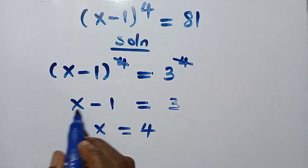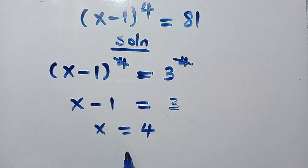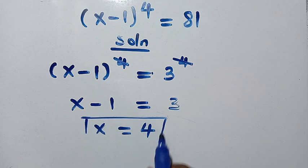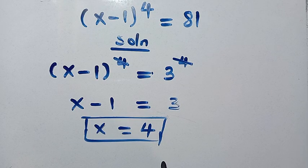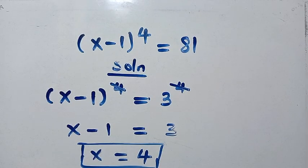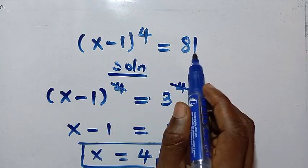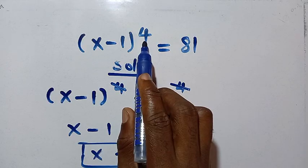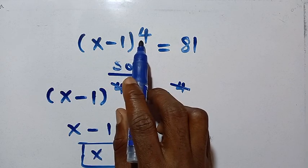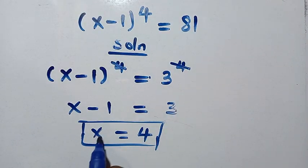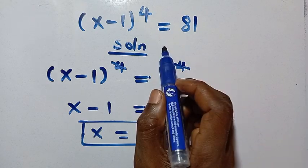By plugging in 4: 4 minus 1 equals 3. But looking at this problem, x equals 4 is only one of the solutions to this equation. Because the power here is 4 — this is quartic — meaning we are getting 4 solutions. One of them is x equals 4. So how can we find the other 3 solutions?